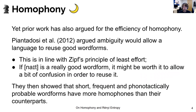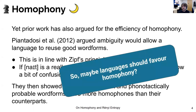On the other hand, prior work has argued for the efficiency of homophony. For example, Piantadosi et al. in 2012 argued that ambiguity would allow a language to reuse its good word forms. So if 'night' is a really good word form, it might be worth allowing some confusion in order to reuse it, since it's fast and efficient to produce. They then showed that good word forms have more homophones than their counterparts, and this was used to argue for ambiguity being a tool for language efficiency. So given this evidence, maybe languages should favor homophony instead, right?